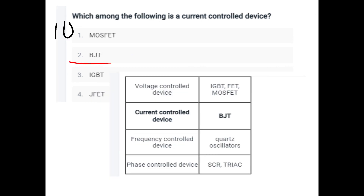The current control device is BJT. Voltage control devices: IGBT, FET, MOSFET. Current control device: BJT. Frequency control devices: crystals, oscillators. Phase control devices: SCR, Triac. This table is very important for exams.